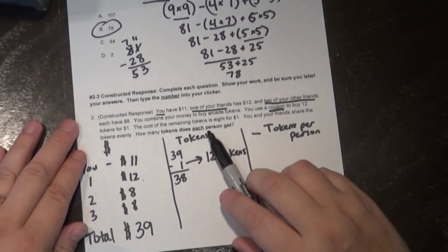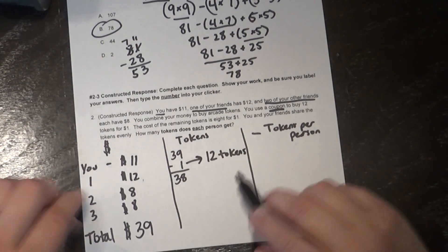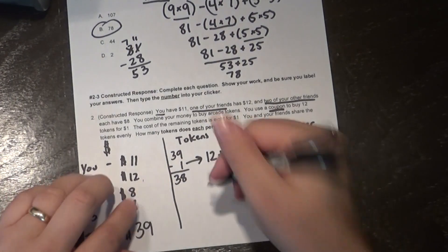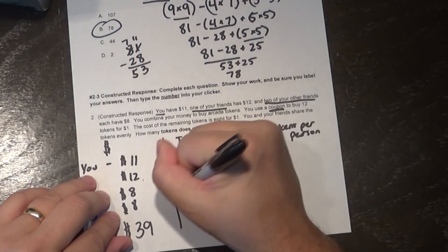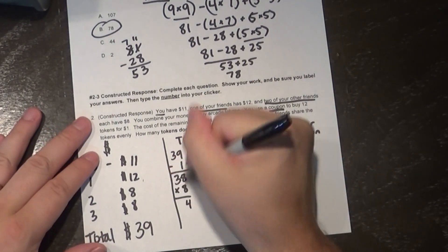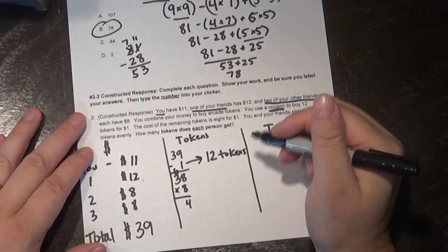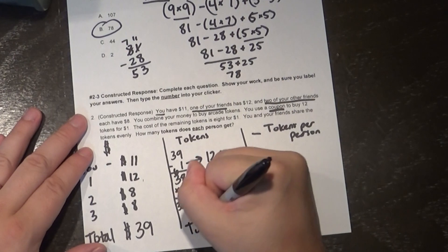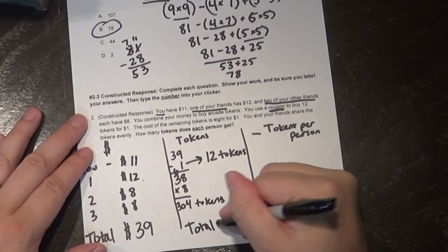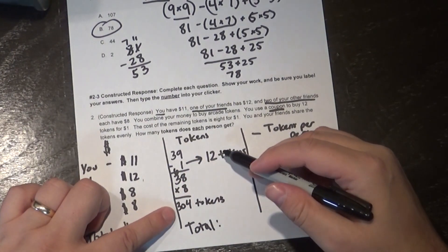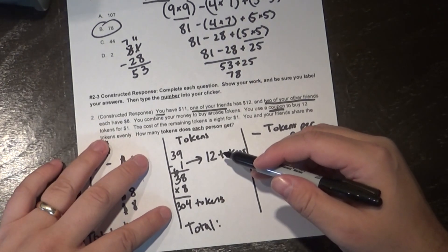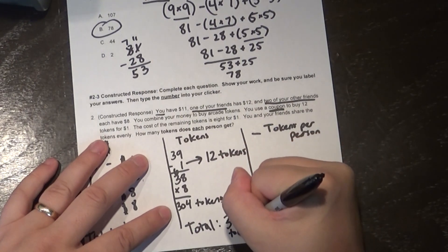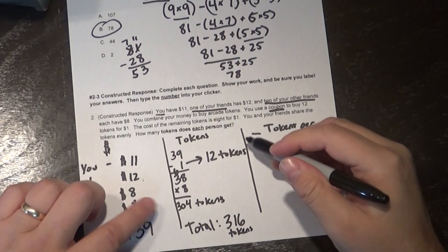Okay next it says the cost of the remaining tokens is 8 for $1. Okay so if I have $1 I can get 8 but I have $38. That means I can multiply that by 8 to figure out how many tokens I can get in all. So 8 times 8 is 64, 8 times 3 is 24 plus 6, that's 30. That means 304 tokens. But I want to figure out the total tokens. So I have 12 tokens plus 304, that means I'm going to add them together. So that gives me 316 all together. And I figured that out by just adding up 12 plus 304.